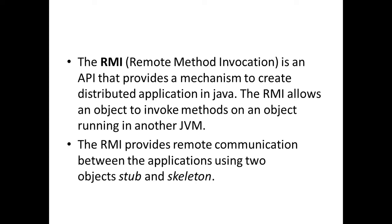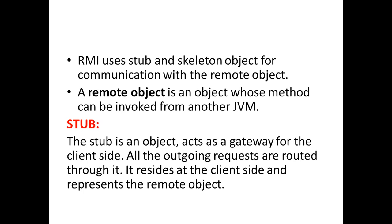In this RMI concept, we are going to have two types of programs: one for the client side and another for the server side. For client and server we have two important objects — stub and skeleton. The stub object is for the client side and the skeleton object is for the server side. The remote object is used to invoke an object of another JVM. The client program runs on one JVM and the server program runs on another JVM, and to communicate or bind these two programs we use the remote object.